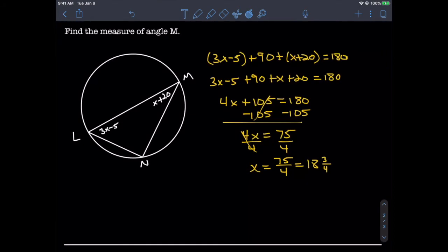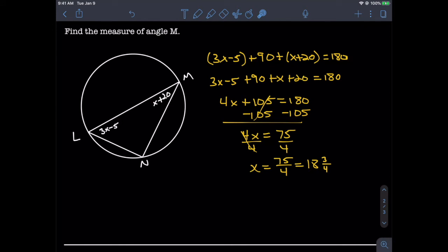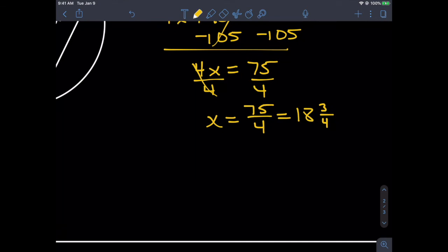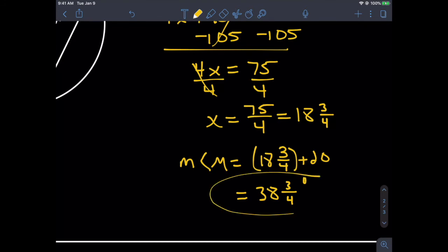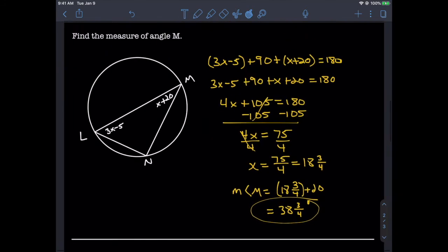Now remember, we weren't asked to find x—we wanted to find the measure of angle M. Angle M is x + 20, and we have a value for x, so let's plug that in. The measure of angle M equals 18¾ + 20, which gives us 38¾. We're talking about an angle here, so we need degrees: 38¾°.